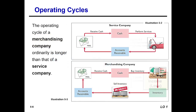Next is the operating cycle. The operating cycle of a merchandising company is ordinarily longer than that of a service company. The service company has a shorter operating cycle, while the merchandising company has a longer one. This is an important distinction between the two types of companies.